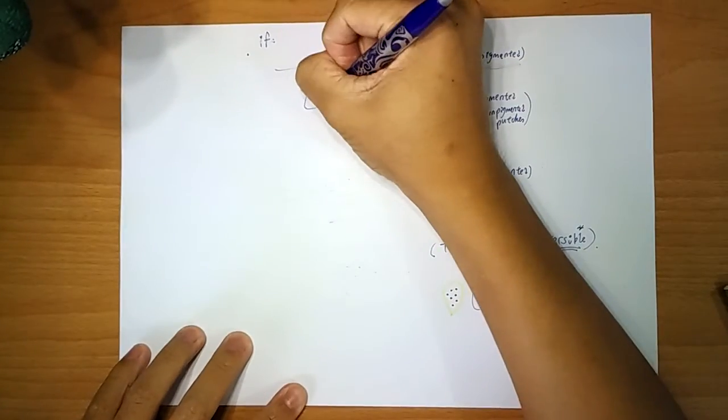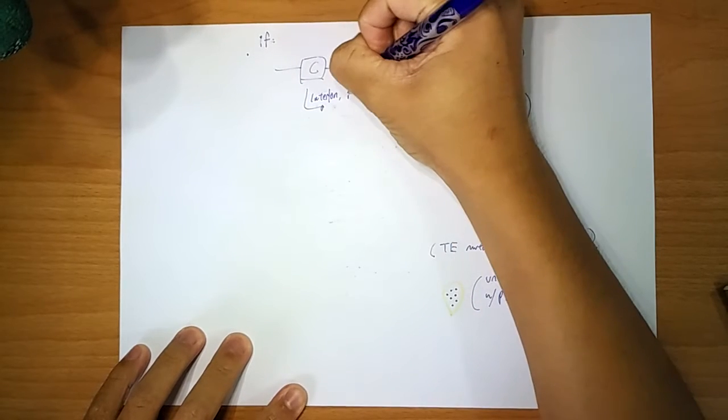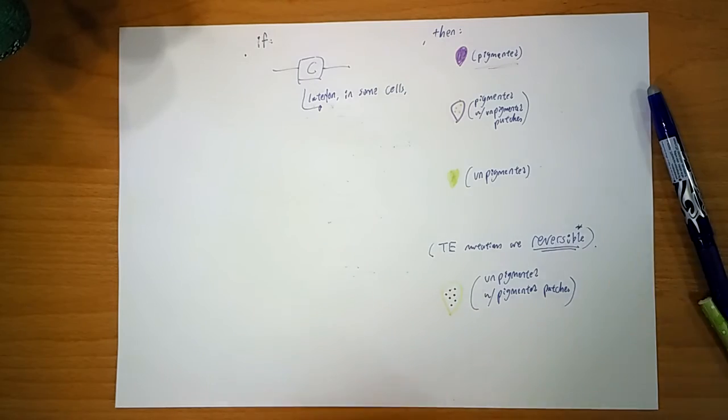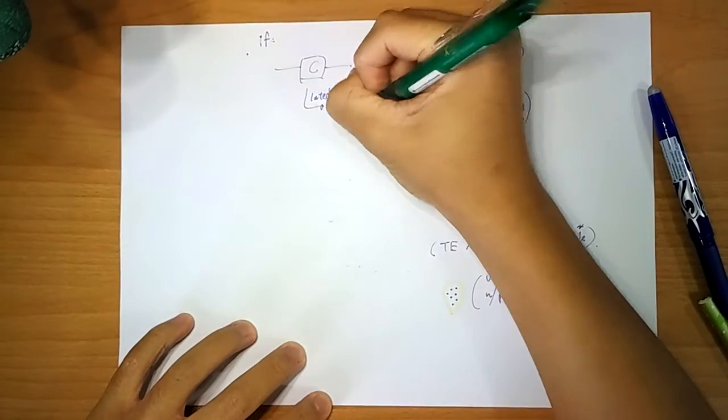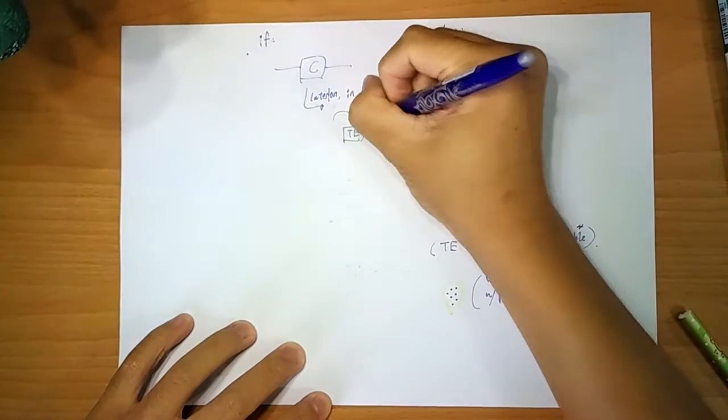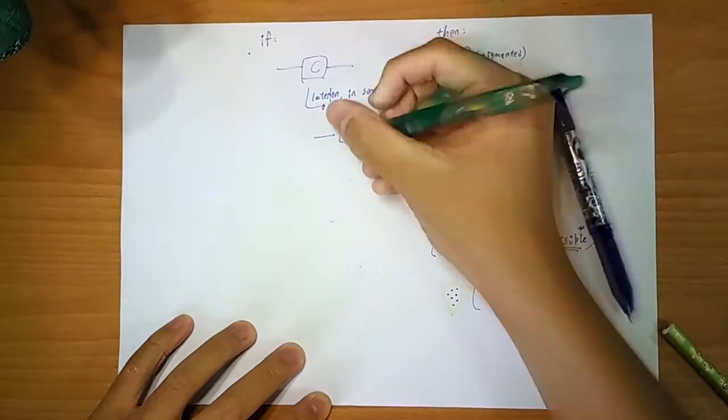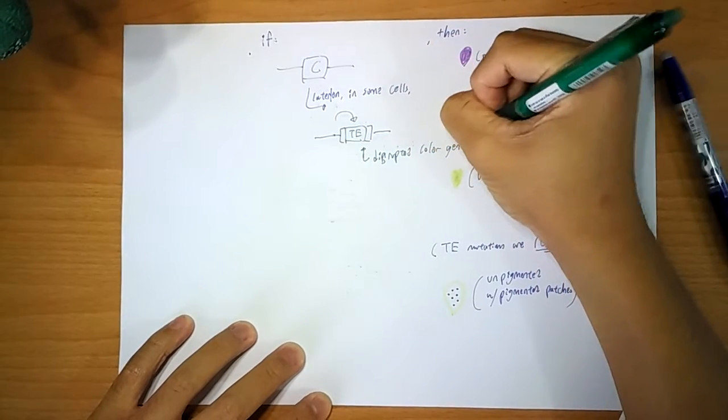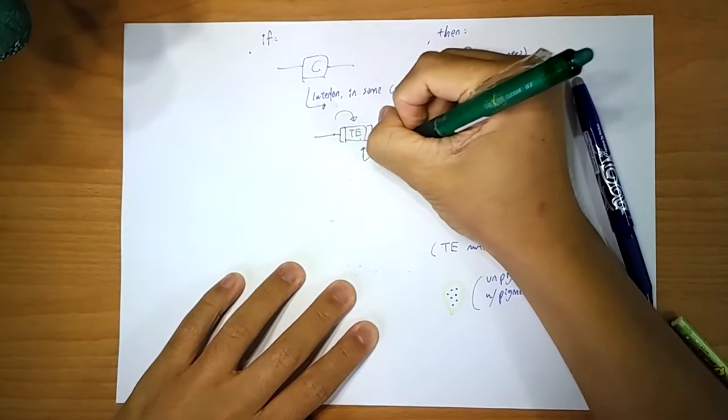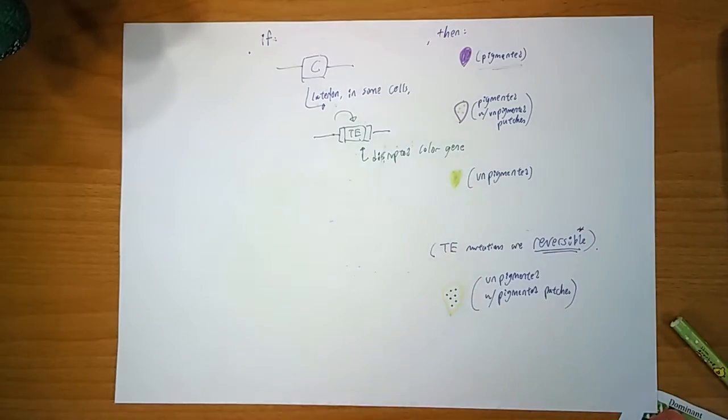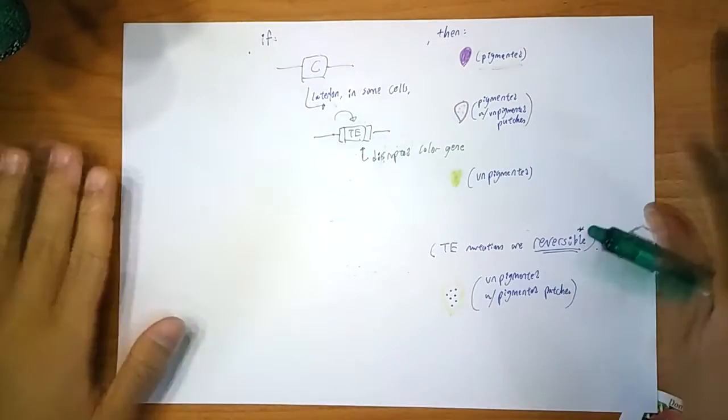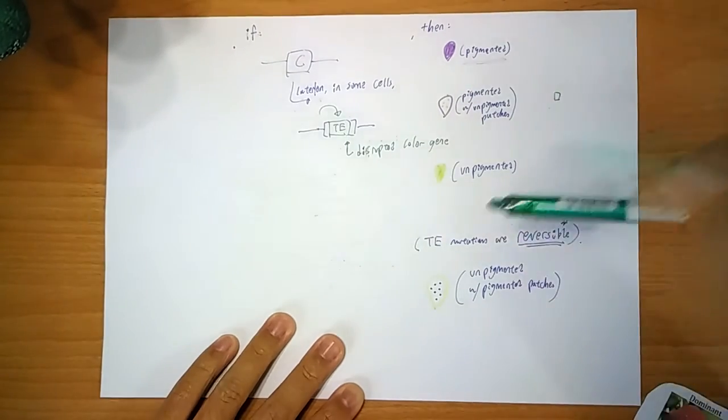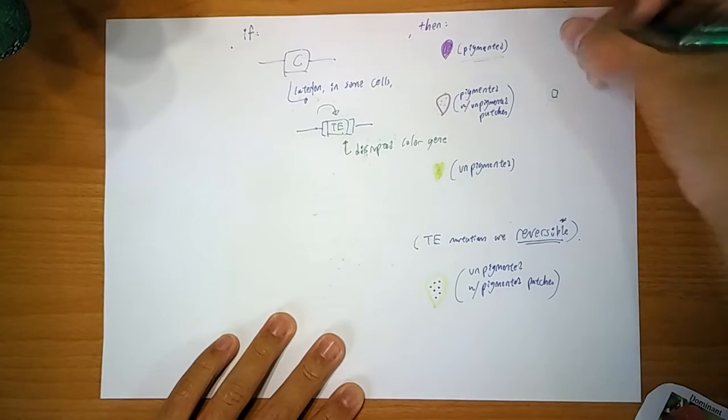But halfway during development, let's say later on, in some cells, the jumping gene jumps straight into your color gene here. So what happens is, it jumps and lands here, right in the middle of this. This will disrupt the color gene. So once the color gene is disrupted, then those cells with the disrupted color genes will start becoming unpigmented. They'll be yellow. So because of the way plant cells divide, if one cell out of all the other pigmented cells becomes disrupted, it'll become unpigmented. And it starts dividing like that.